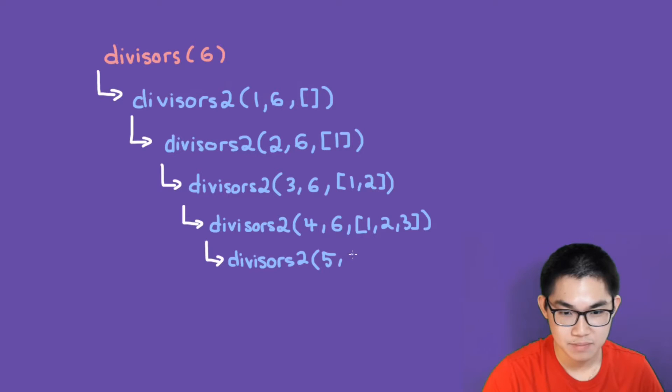This becomes 5. The second number is always 6. And now we take 4, divide by 6. And we will notice that 6 cannot divide 4. So we don't add 4 into the list. The list stays the same.